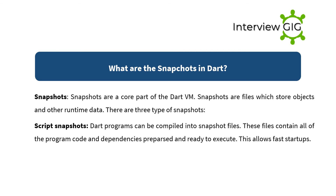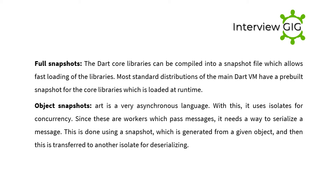Full snapshots: the Dart core libraries can be compiled into a snapshot file, which allows fast loading of the libraries. Most standard distributions of the Dart VM have a pre-built snapshot for the core libraries loaded at runtime. Object snapshots: Dart is a very asynchronous language and uses isolates for concurrency. Since isolates pass messages, it needs a way to serialize a message. This is done using a snapshot generated from a given object, which is then transferred to another isolate for deserializing.